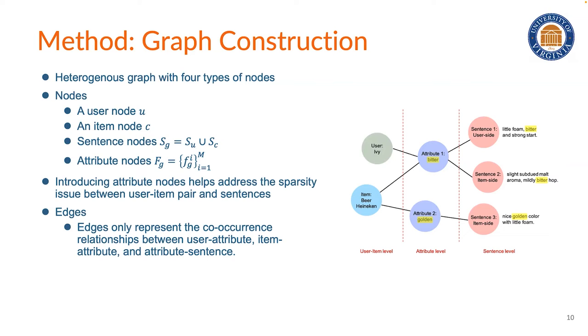Each graph consists of a user node, an item node, and several sentence nodes, which is the union of user-side sentences and item-side sentences. And finally, several attribute nodes, which connect user-item and sentence.